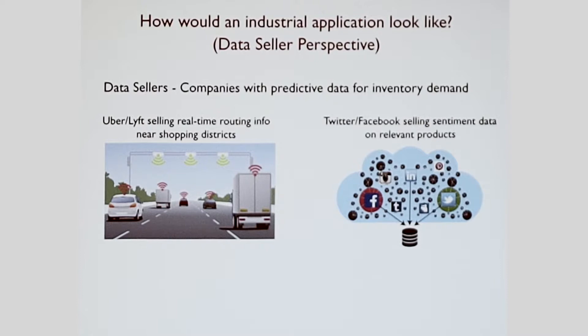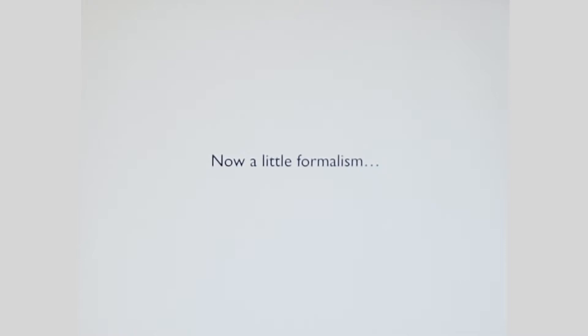Now who are sellers? Sellers in our mind would be companies like Uber and Lyft, selling real time routing info in shopping districts. This information would be super useful for a supply chain company and could be a source of a great deal of additional revenue for these kinds of companies. Or it could be social media companies selling sentiment data on relevant products. A data seller just needs to decide what data they want to provide in the market that they believe is predictive.